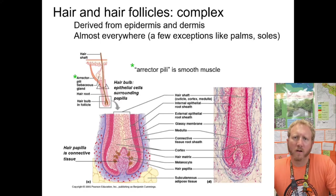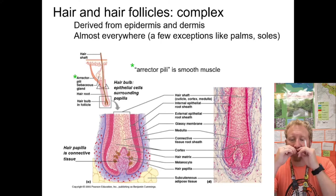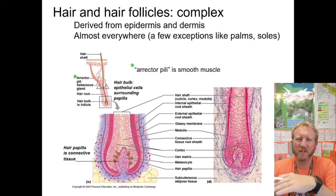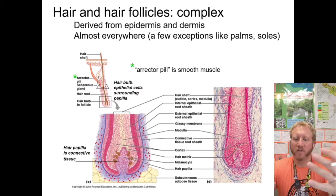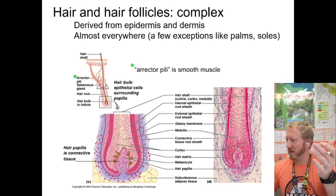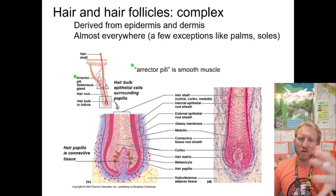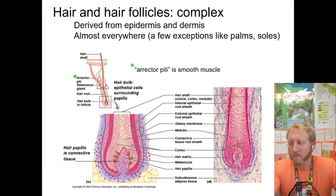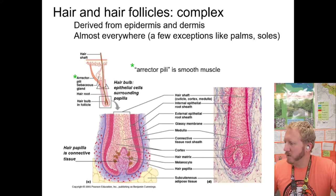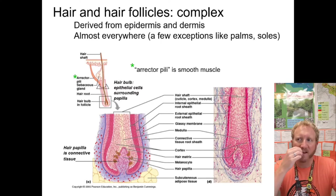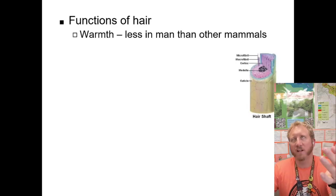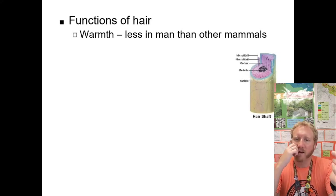Hair and its follicles form a complex derived from both the dermis and epidermis. Hair is found pretty much everywhere on the body except the palms and soles — you don't want anything inhibiting your ability to grip or walk. Hair has little muscles called arrector pili that make the hair stand up — that's what goosebumps are: that muscle contracting and lifting the hair.